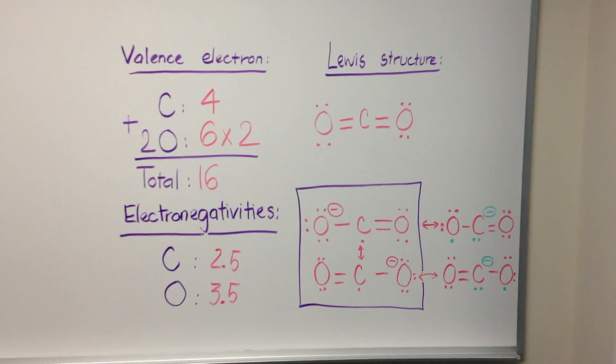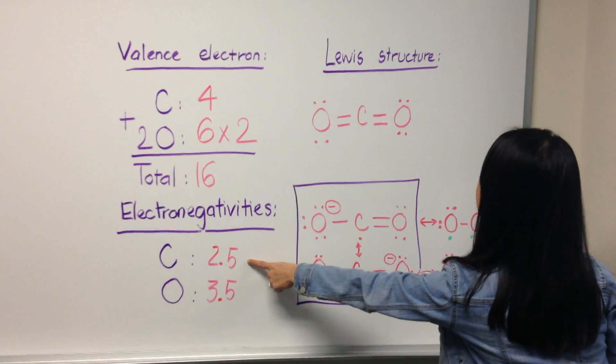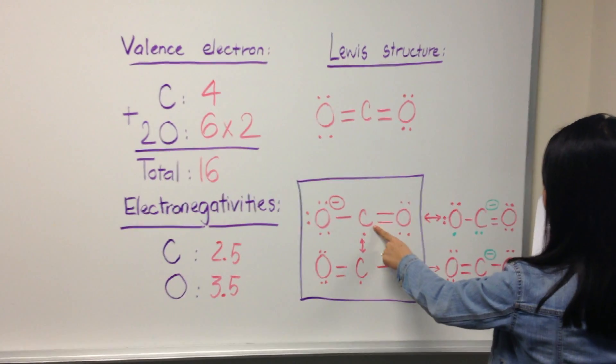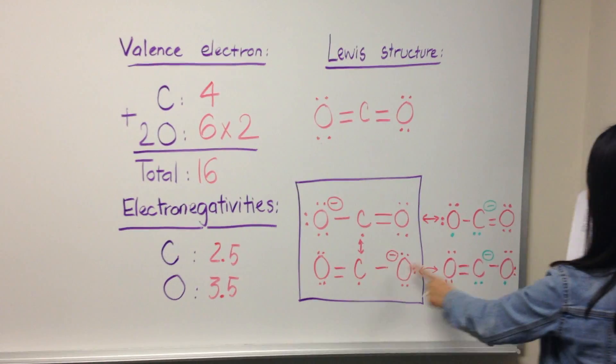However, since oxygen is more electronegative than carbon, it is more favorable for carbon to be the electron deficient atom, as shown in the boxed Lewis structures.